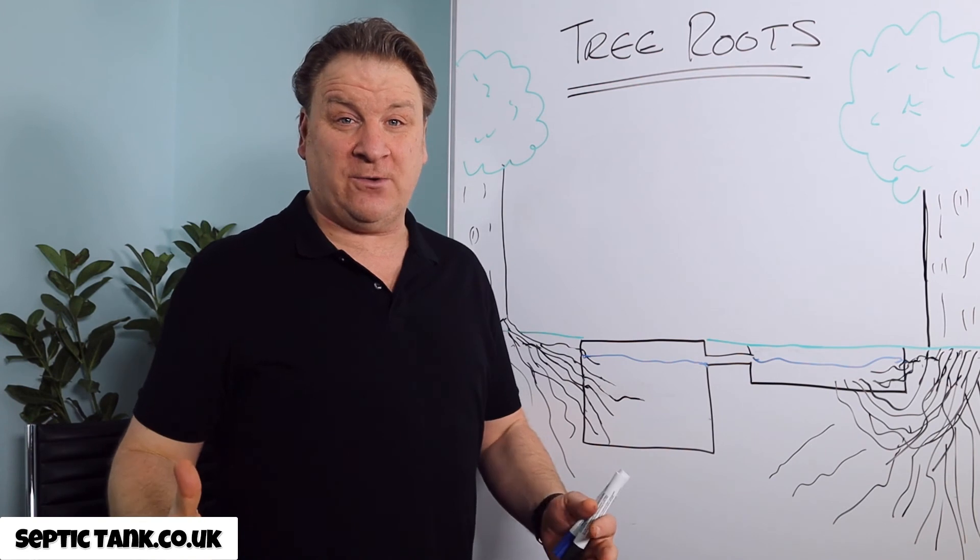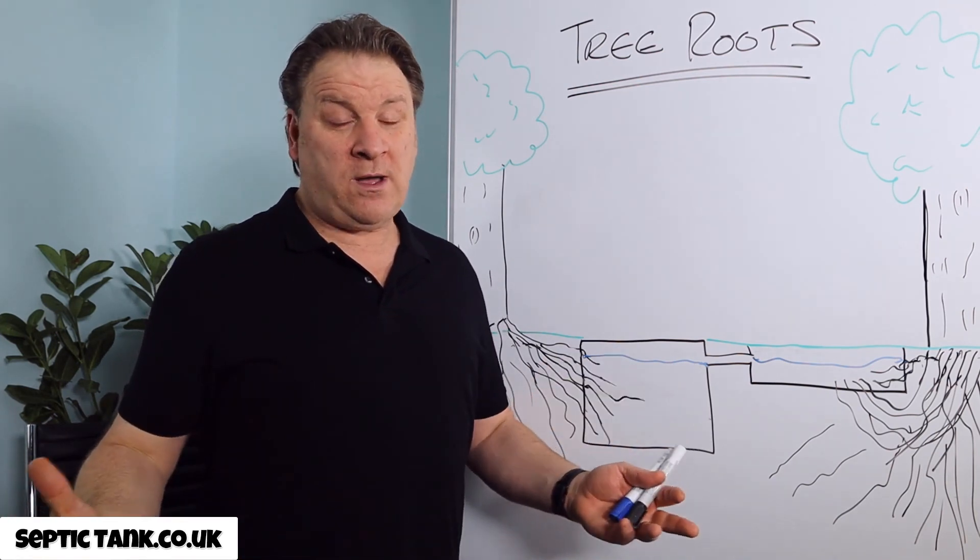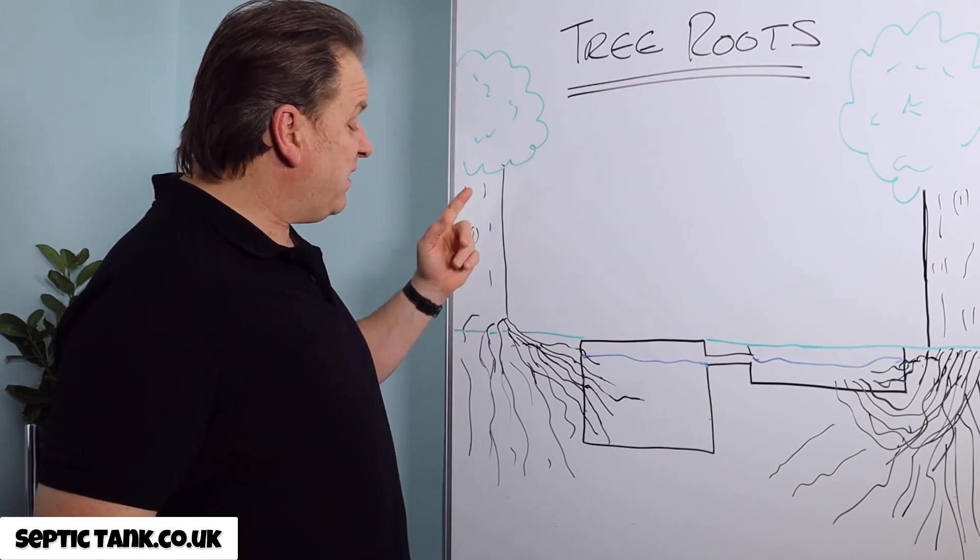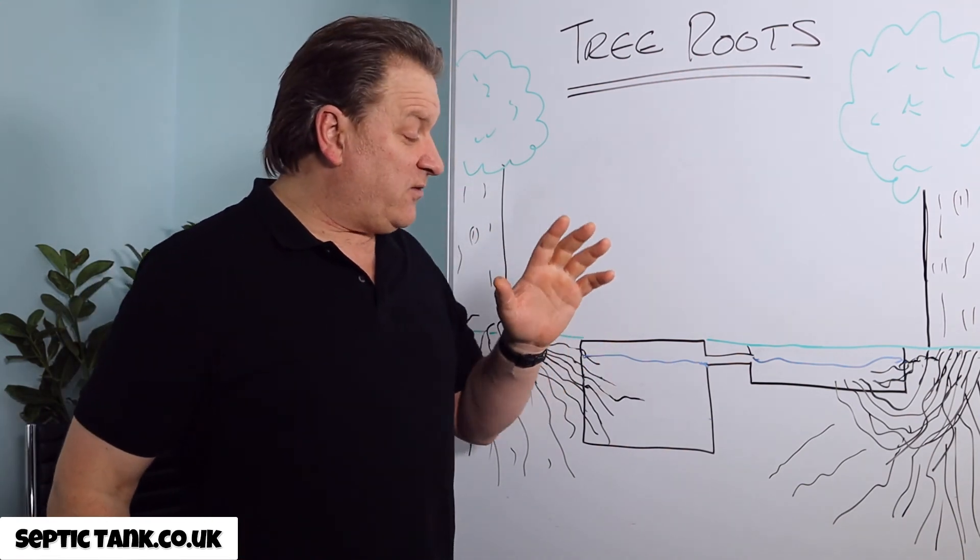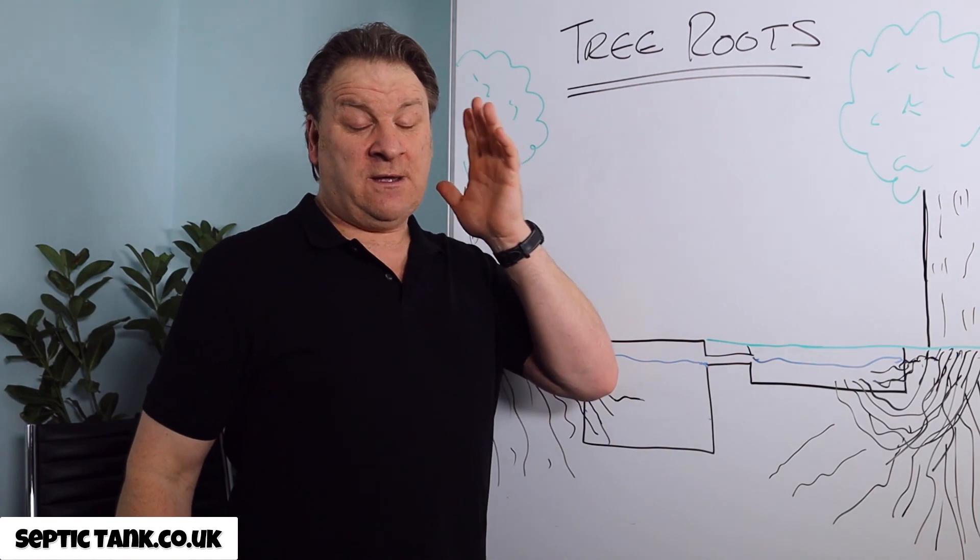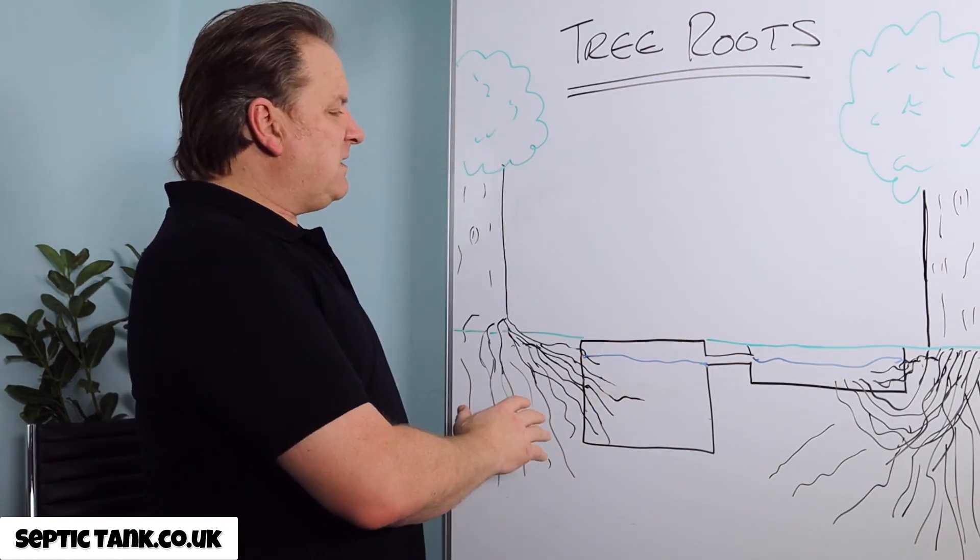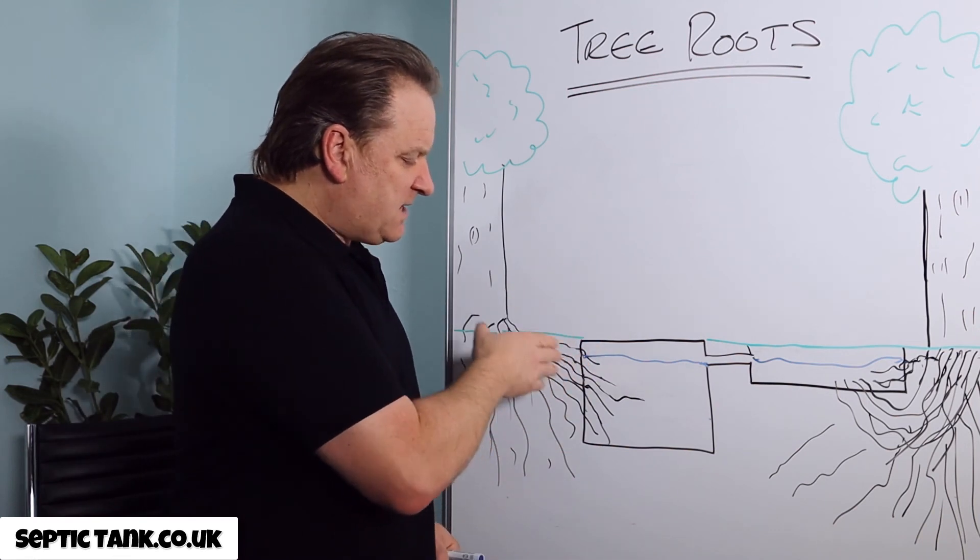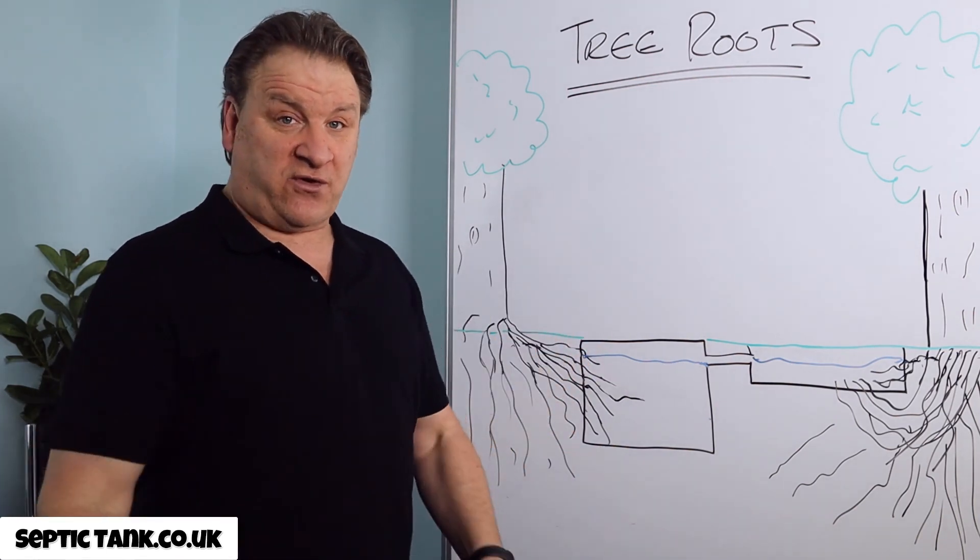So is that the right thing to do? Well, no, I don't think it is. So let me show you why I think that trees and tree roots are a septic tank and drainage field's best friend. Okay, so first of all, let me explain the pros and the cons of tree roots.